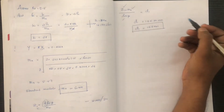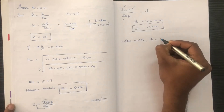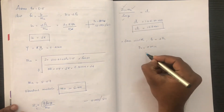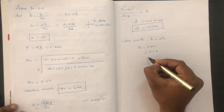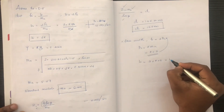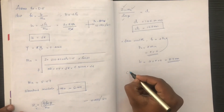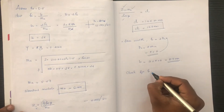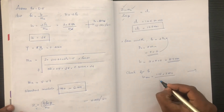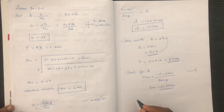Next, we calculate the face width b. Face width b = 3 into Pn, where Pn = pi into mn. Substituting: b = 3 into pi into mn (which is 6). The equation gives b = 1.15 into pi into mn, and b comes out to 43.35 mm.